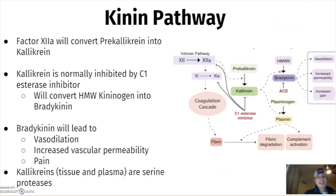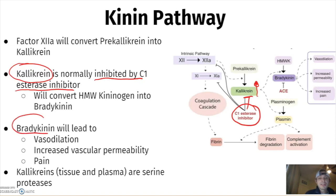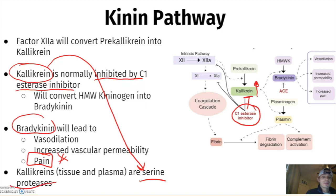Now the kinin pathway. Kallikrein is normally inhibited by C1 esterase inhibitor. If you have low C1 esterase inhibitor, you'll have increased kallikrein and a predisposition for angioedema. Bradykinin causes pain — that's what's unique for Step 1, since vasodilation and increased vascular permeability are common to many inflammation factors. Also know that kallikrein is a serine protease.